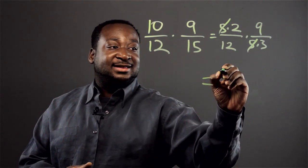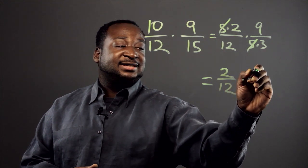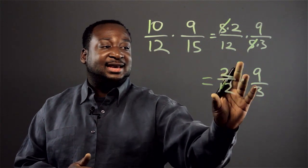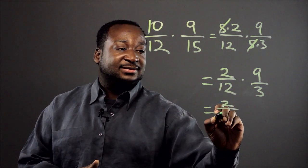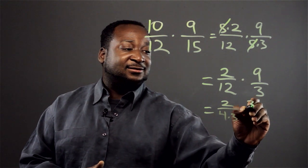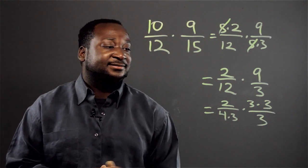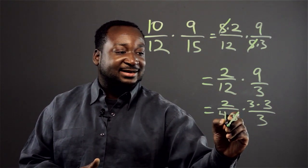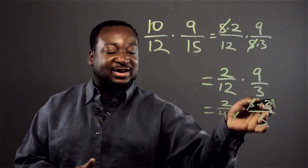So now we're left with 2 over 12 times 9 over 3. You notice that this can also be written as 2 over 4 times 3, times 3 over 3. We see that this 3 cancels with this 3 — we're cross-simplifying, simplifying across.